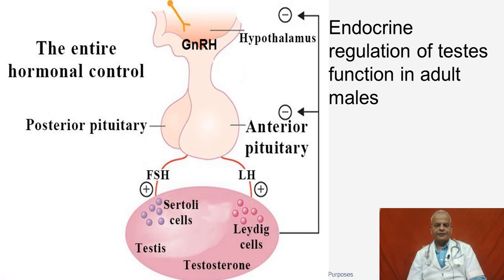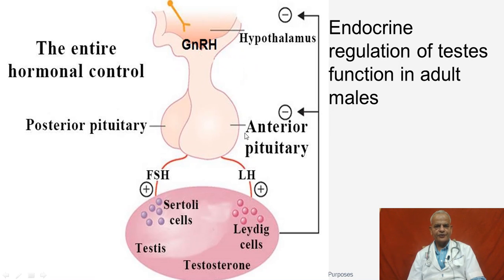Male reproduction is entirely under hormonal control, and hormones are controlled by a wide variety of environmental, nutritional, photoperiodic, and other cues. GnRH is the main hormone which causes the anterior pituitary to release FSH and LH. FSH affects the Sertoli cells and LH affects the Leydig cells to produce testosterone.